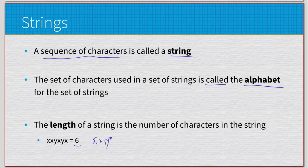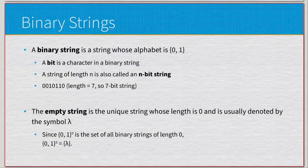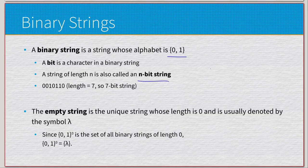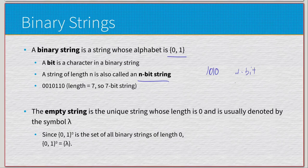Binary strings are where things get more interesting for computer science. A binary string is a string whose alphabet is strictly {0, 1}. A bit is a single character in a binary string, and a string of length n is called an n-bit string. This is the foundation of what gets passed through computers — a four-bit value like '1010', up through 16-bit, 32-bit, and the modern 64-bit values used in today's computers.